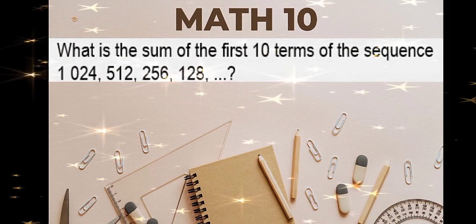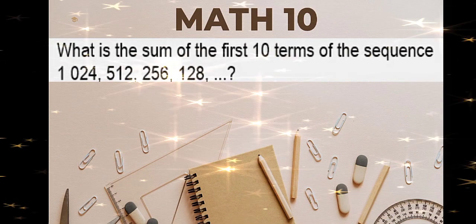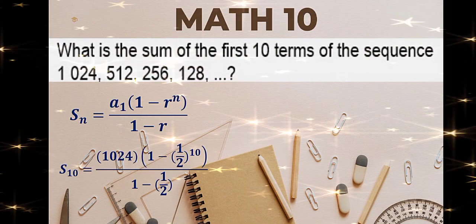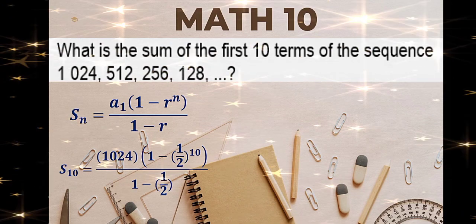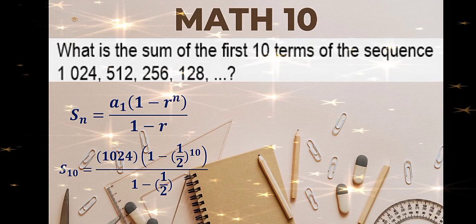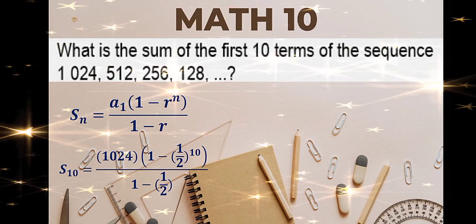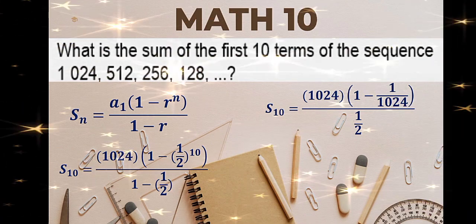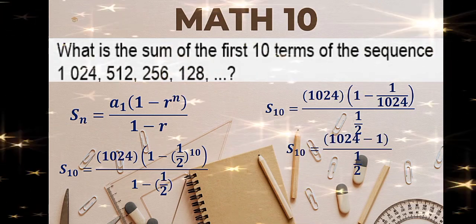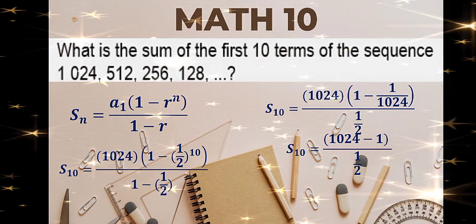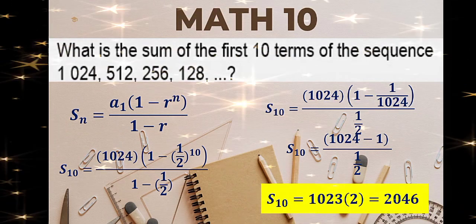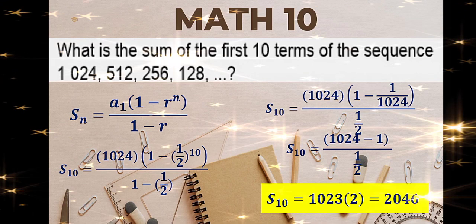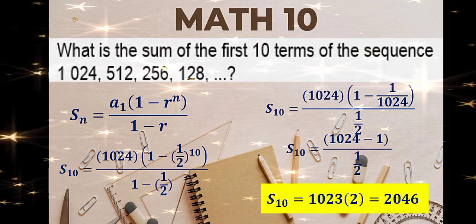What is the sum of the first 10 terms of the sequence 1024, 512, 256, 128? Find the common ratio: 128 divided by 256 is 1/2. So r is 1/2. First term is 1024 and nth term is 10. Substitution and simplify: (1/2) raised to 10 is 1 over 1024. Substituting: 1024 times 1 is 1024, and 1024 times 1/1024 is 1. Copy the denominator. 1024 minus 1 is 1023. Keep-change-flip: 1023 times 2 over 1 is 2046. The sum of the first 10 terms is 2046.